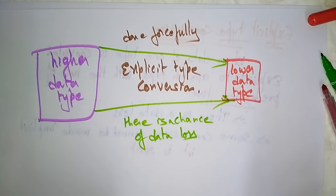So these are the two different types of conversions: one is implicit type conversion and another is explicit type conversion. Thank you.